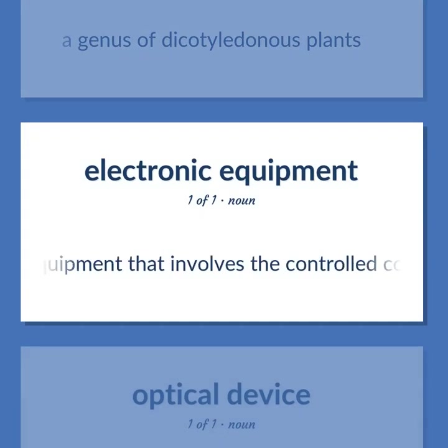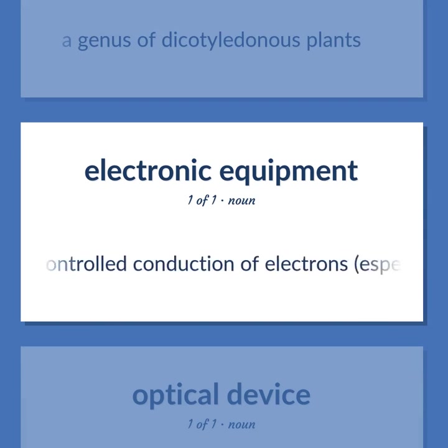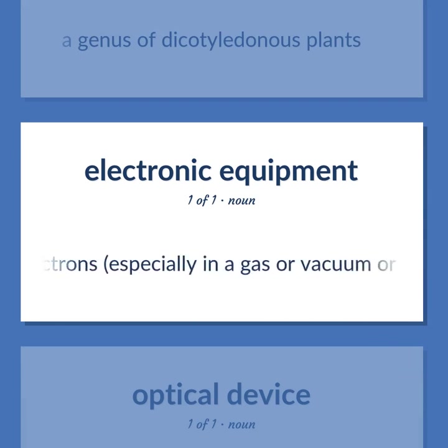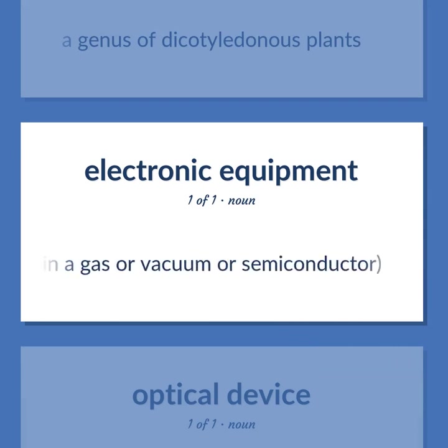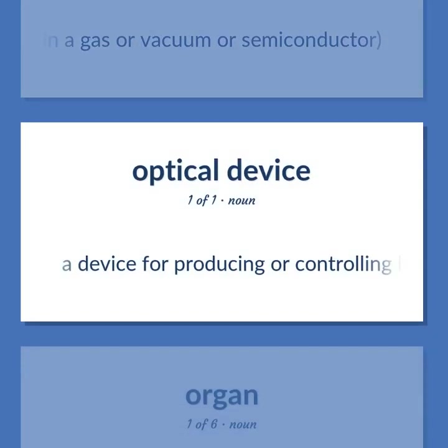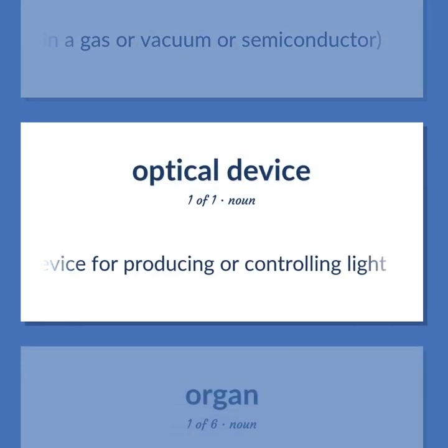Organ: equipment that involves the controlled conduction of electrons, especially in a gas or vacuum or semiconductor. Also: a device for producing or controlling light.